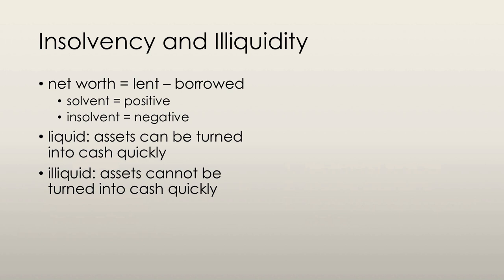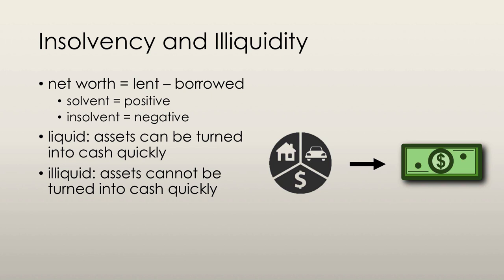Net worth is the market value of what the financial institution has lent minus the value of what it has borrowed. A financial institution is solvent if this net worth is positive, and insolvent if this net worth is negative — meaning it can't pay its debts and will go bankrupt if lenders demand repayment. Liquidity refers to how quickly assets can be turned into cash. A firm is liquid if assets can be turned into cash quickly, and illiquid if they cannot.